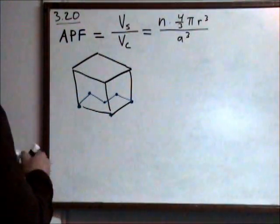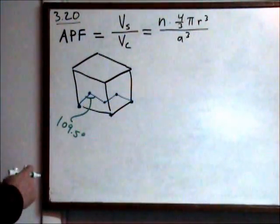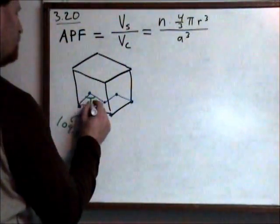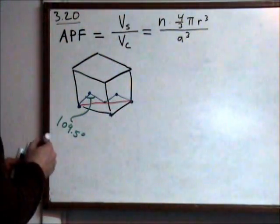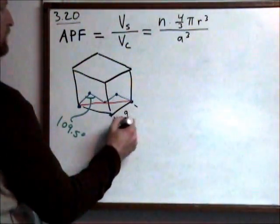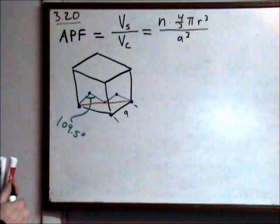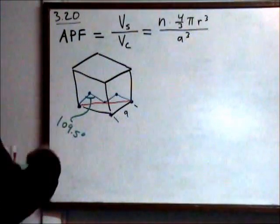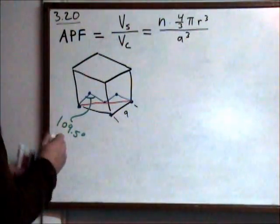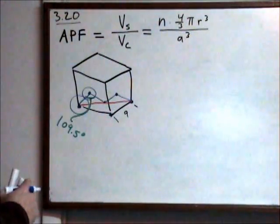And it's given that this angle here is 109.5 degrees. This distance is the diagonal, and this distance is A. So it's now a matter of geometry to relate the radii, which are touching right here, right here to A.